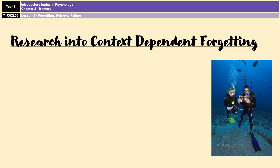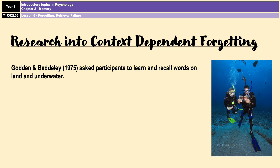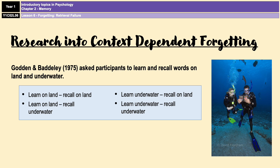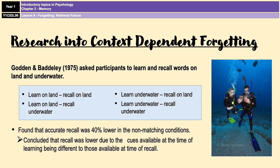The first study is by Godden and Baddeley, who looked at context-dependent forgetting. They had 18 participants and asked them to learn and recall word lists on land and underwater. They used a repeated measures design, which created four groups, with each participant taking part in all four conditions over four separate days. Their findings were simple: when the conditions matched, recall was the highest, with recall being around 40% lower in the non-matching conditions.